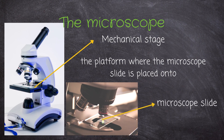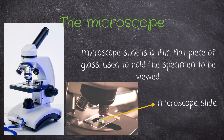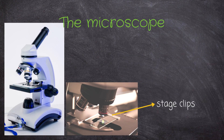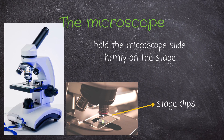The microscope slide is a thin piece of glass that is used to hold the specimen in place. The stage clips are what is used to hold the microscope slides firmly on the stage.